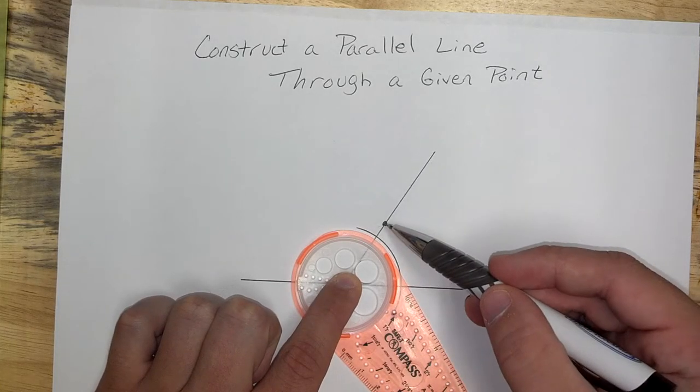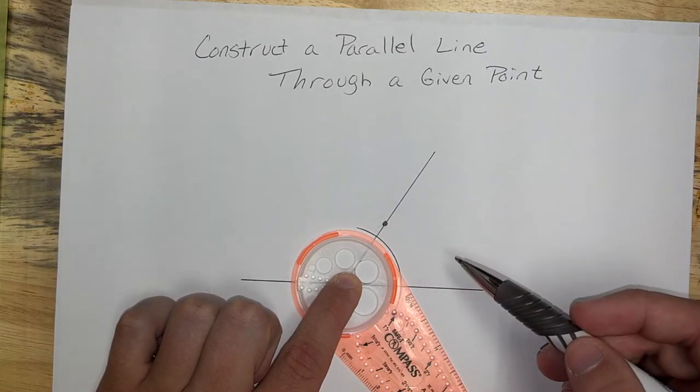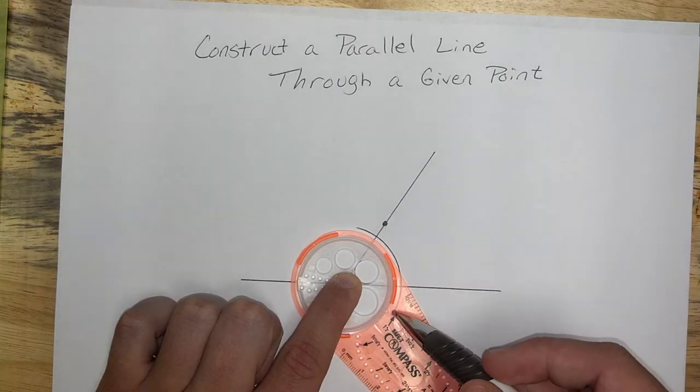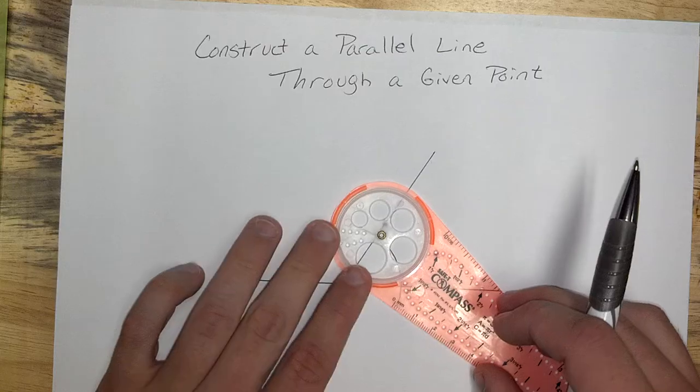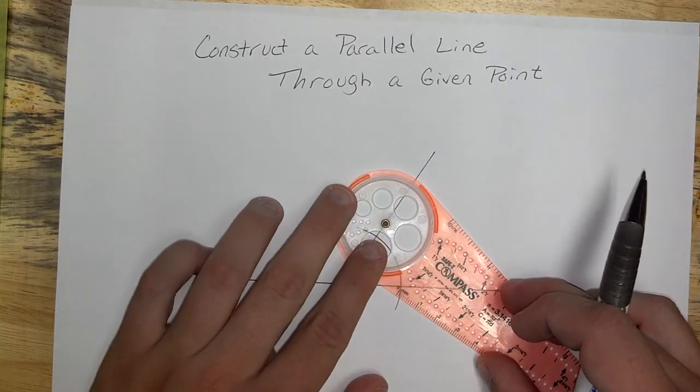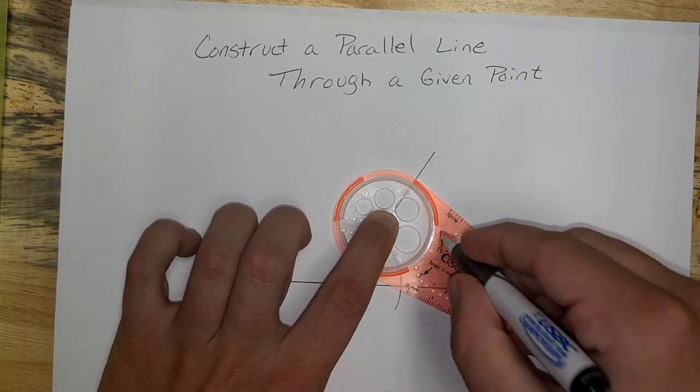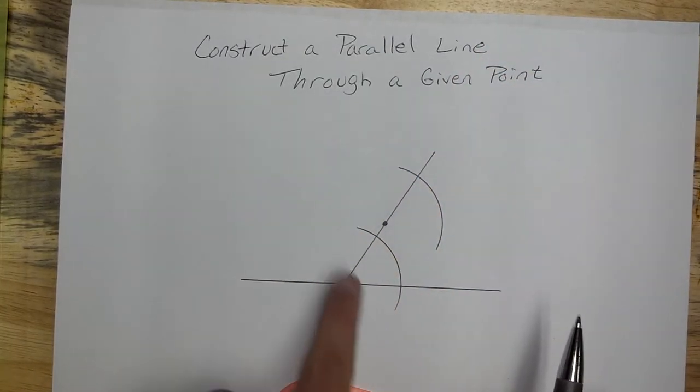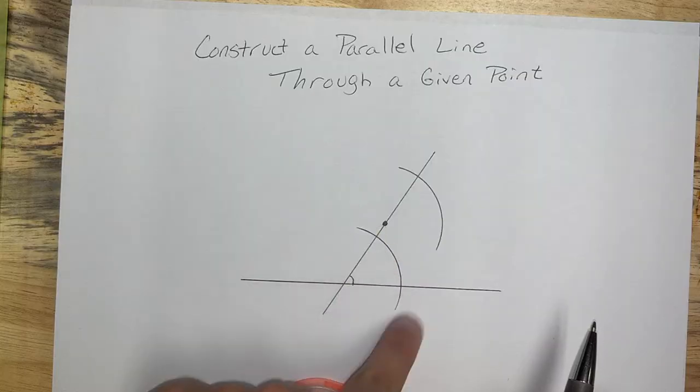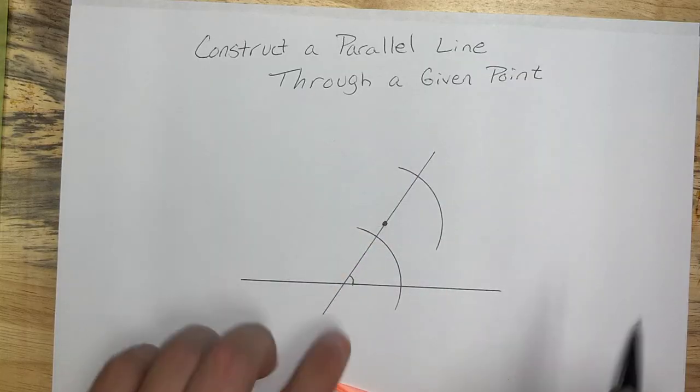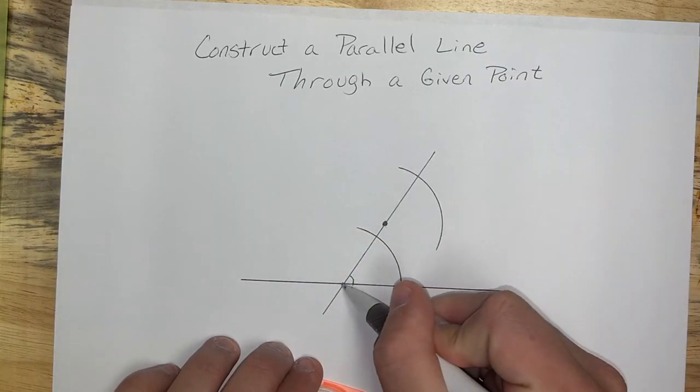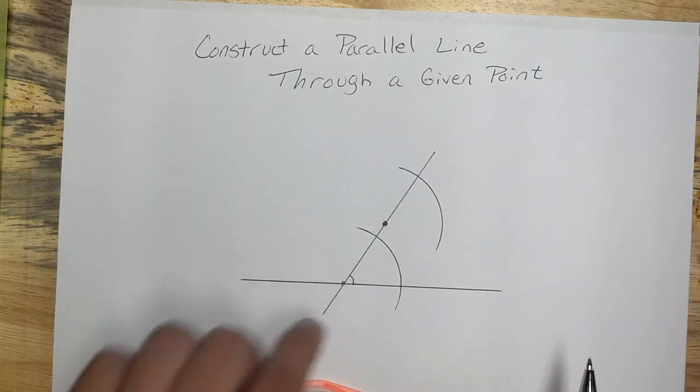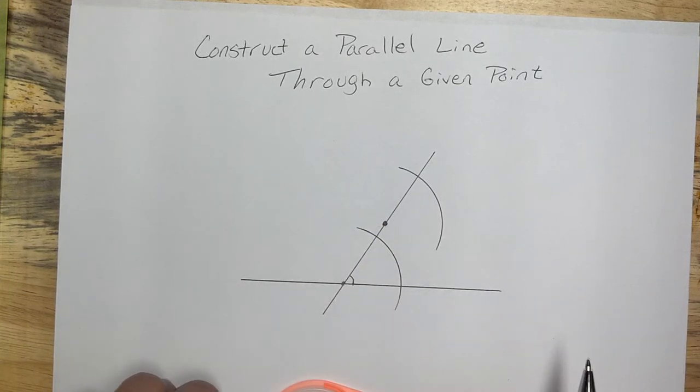Now go up to the point that we started with that was off of our line. Use that same hole. For me, first hole right here by the nice bold arrow. Again, same hole, make an arc. So, all that we've done so far is we've made two arcs where this point up here and this point down here were the two vertices basically of my angles.